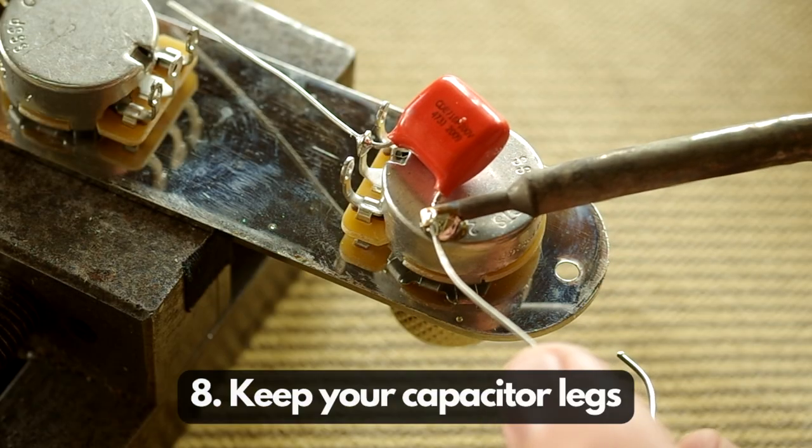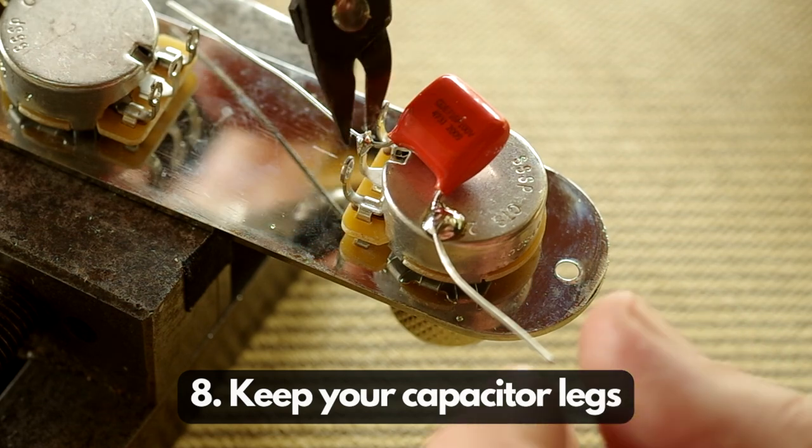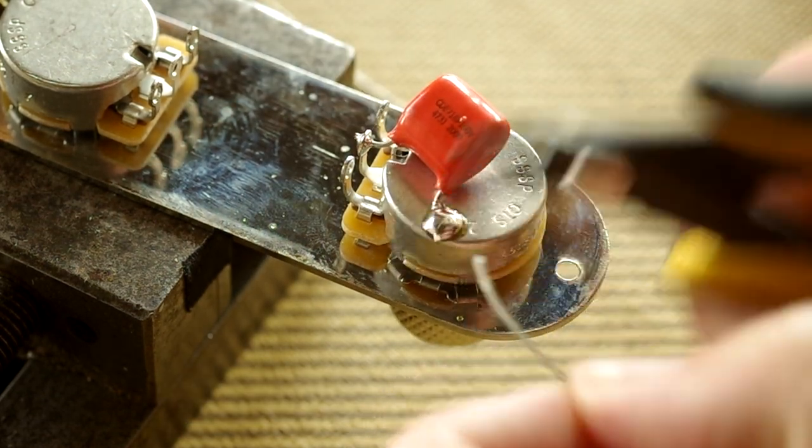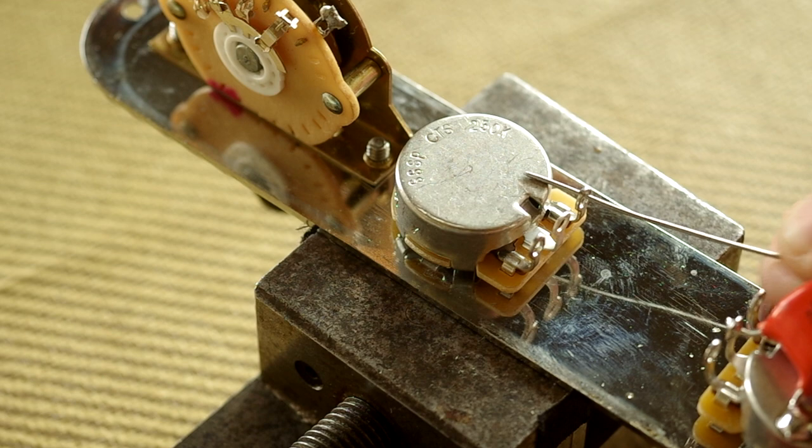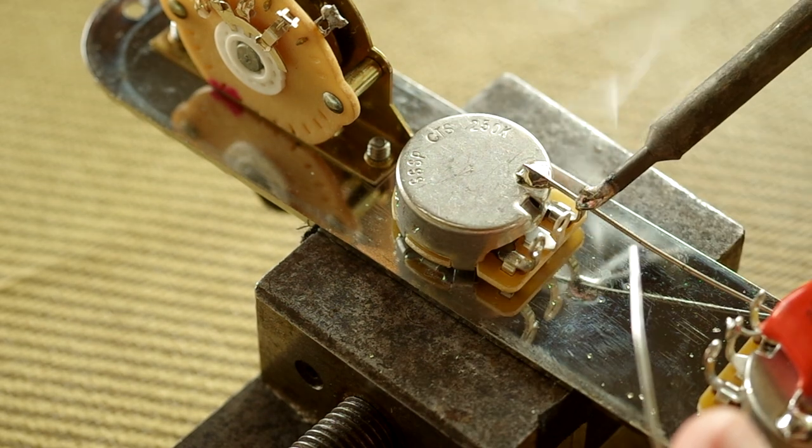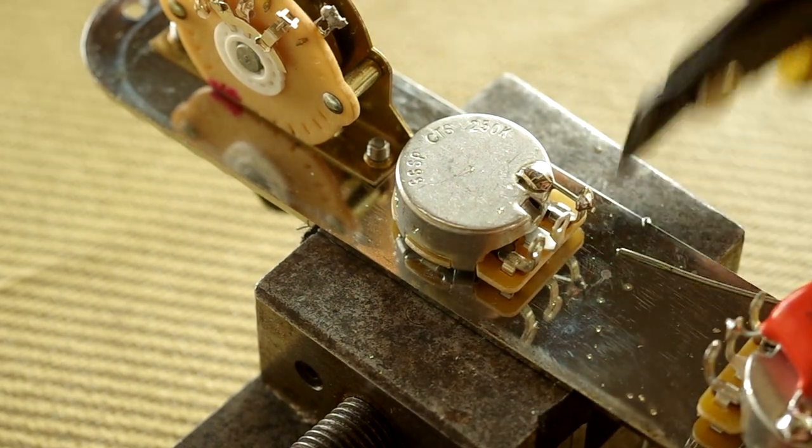Tip number eight is to keep your capacitor legs. Once you've soldered a cap in place, you'll probably find that you've got quite a bit of leg material left over. That can be used to do all sorts of soldering jobs, like grounding from one area to another, and it just takes the place of fiddly wires.